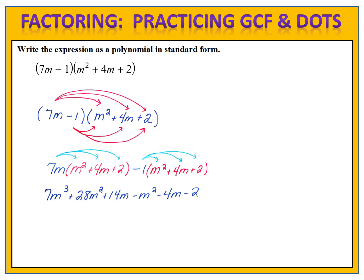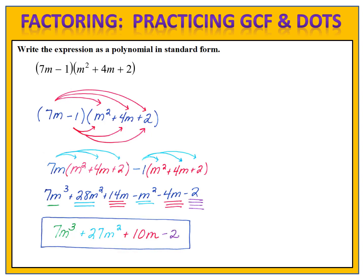Now let's combine like terms. We want to write our final answer in standard form, so let's begin by looking for the term with the largest exponent — that would be m³. There are no other m³ terms, so we simply have 7m³. For the m² terms: 28m² minus 1m² gives us 27m². For the m terms: 14m minus 4m is 10m. And we simply have a constant at the end of minus 2. Final answer: 7m³ plus 27m² plus 10m minus 2.